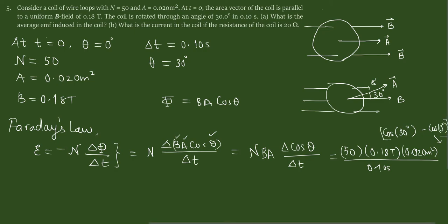Okay. So if I do the calculation, let's see what I get. So 50 times 0.18 times 0.02 times, put the cosine in parenthesis, so cosine 30 degrees minus cosine 0 degrees, and that over 0.10. That gives me negative 0.24. Let me do one more time.